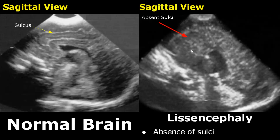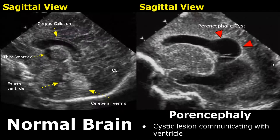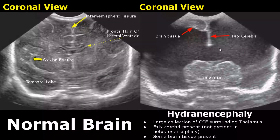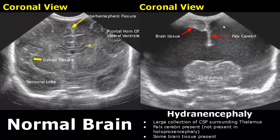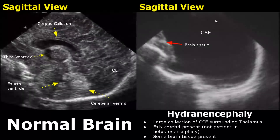In porencephaly, a cystic lesion is seen communicating with the ventricle — the cyst is connected to the ventricle. In hydranencephaly, there is a large collection of CSF surrounding the thalamus. It looks like holoprosencephaly but there is a difference: falx cerebri is present here, whereas in holoprosencephaly falx cerebri is absent. Some brain tissue is also found. This sagittal view shows hydranencephaly with a large collection of CSF and some brain tissue.